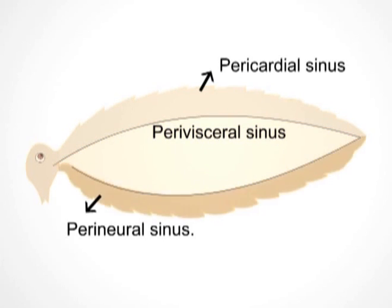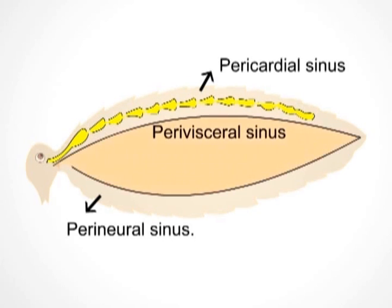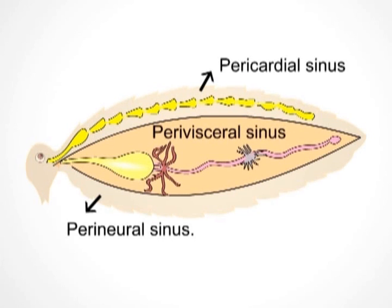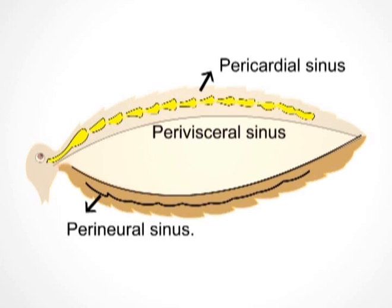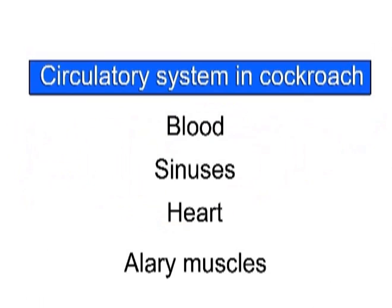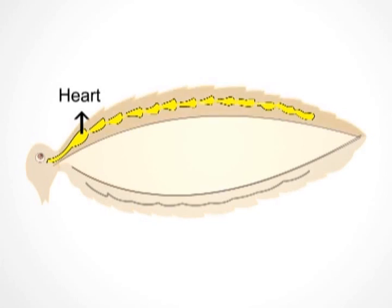The body cavity of cockroach is divided into three chambers or sinuses. The dorsal sinus is also called the pericardial sinus, where the heart is present. The middle sinus contains visceral organs and is called the perivisceral sinus. The ventral sinus surrounds the ventral nerve cord and is called the perineural sinus.